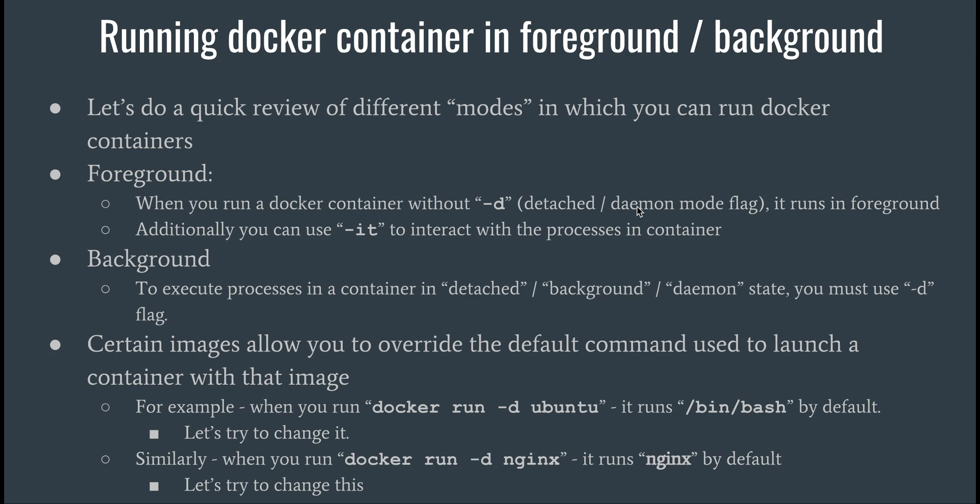On the contrary, if you want a container to keep running in the background, you can use the detached mode - also known as daemon or background state - by using the hyphen d flag. In that case it will keep running in the background and you can use docker ps to see the currently running containers. Certain images also allow you to override the default command used to launch a container - for example, Ubuntu in detached mode launches with the command bin bash by default.